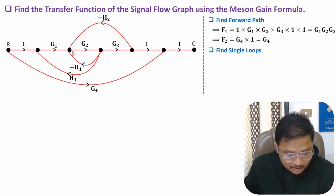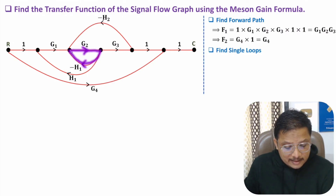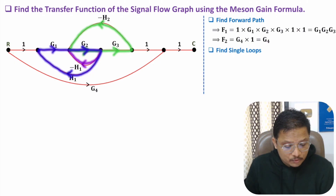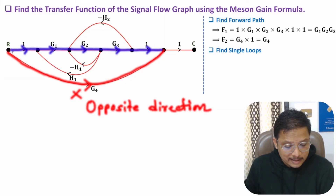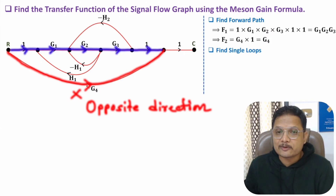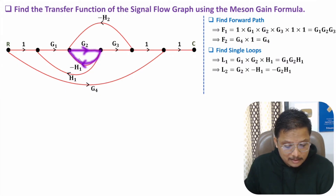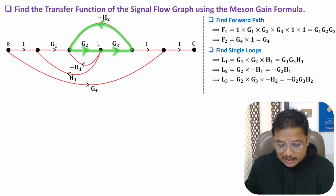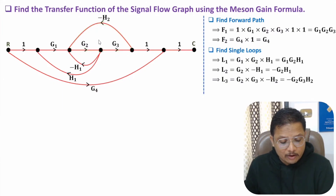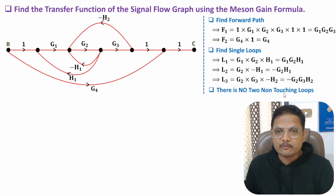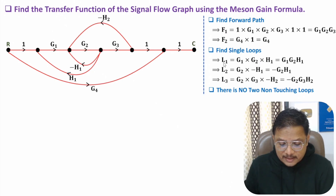Otherwise, there are no other forward paths. So F1 = G1·G2·G3 and F2 = G4. Now identify single loops. We have three single loops: L1 is G1·G2·H1 (note direction must be considered — opposite direction loops are excluded); L2 is G2·(−H1); and L3 is G2·G3·(−H2). All three loops are touching each other, so we don't have any two non-touching loops.